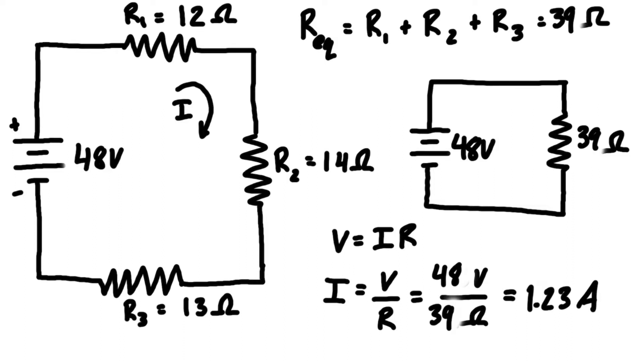You could do this for any type of problem like this where there is a single voltage source and resistors in series. All we have to do is find the equivalent resistance and then use Ohm's law V equals IR, rearrange it for the current, and we're able to figure it out.